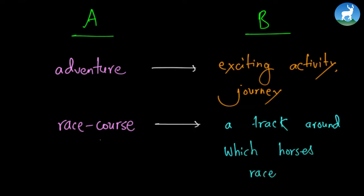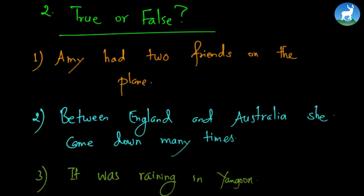Now let's go to another question which is finding out whether the statements are true or false. First let's find out whether these three statements are true or false. The first one we have is, Amy had two friends on the plane. Is it correct? I don't think it is correct because she was the first person to fly alone from London England to Darwin. So this is in fact a false statement and Amy was rather traveling alone.